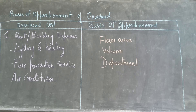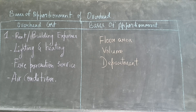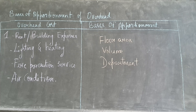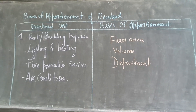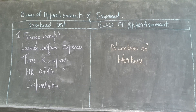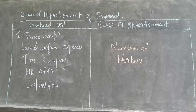Let us discuss the bases on which overhead costs are apportioned. Rent, building expenses, lighting and heating expenses, fire precaution service, and air conditioning — these are divided on the basis of floor area or floor volume. Fringe benefits, labor welfare expenses, timekeeping department expenses, HR office expenses, and supervision expenses — these are divided on the basis of the number of workers in each department.